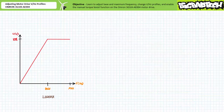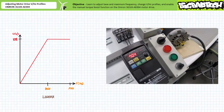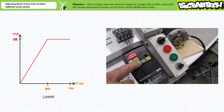We can perform the same inspection at various points inside the 0 to 100 hertz excitation frequency range to find linearly increasing applied voltage up to the base frequency of 60 hertz, beyond which applied voltage flat lines at 100 percent. For example, at an excitation frequency of 70 hertz, we find parameter D013 output voltage monitor to be roughly 100 percent of the available line-to-line voltage.